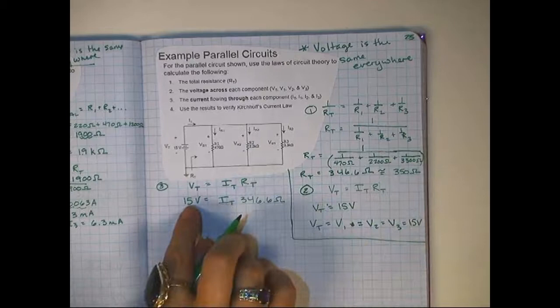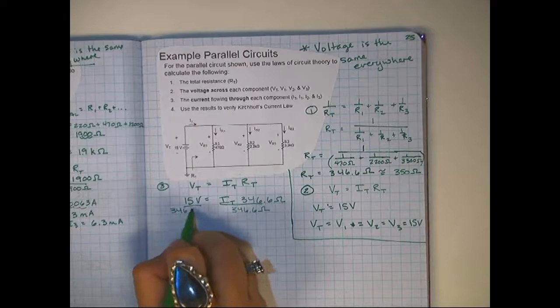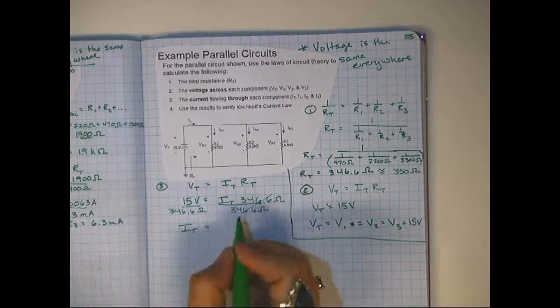Then how do you solve this? It's an algebra problem, so remember you have to divide by this one. Put that in your calculator, and we get that the total current is